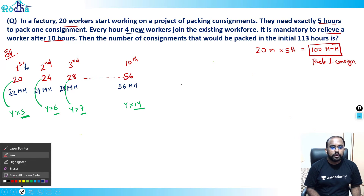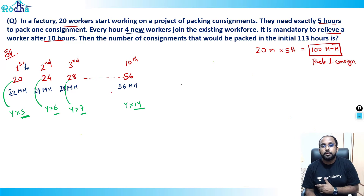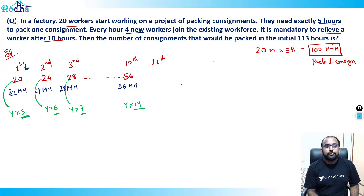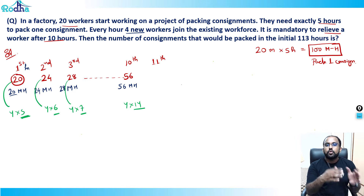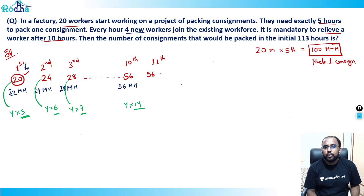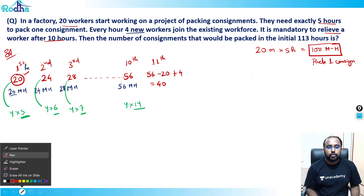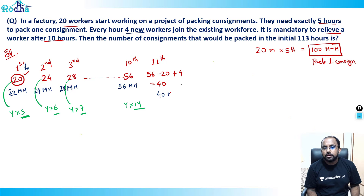Here is where many people make a mistake. In the 11th hour, it is mandatory to relieve a worker after 10 hours, so the original 20 workers who started in hour 1 must now leave. Four new workers join as usual. So: 56 − 20 + 4 = 40 workers. In the 11th hour, 40 man-hours of work is done.